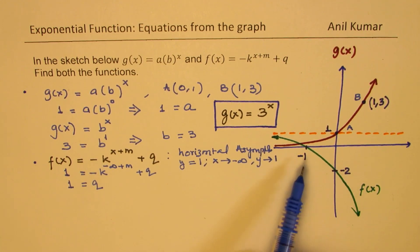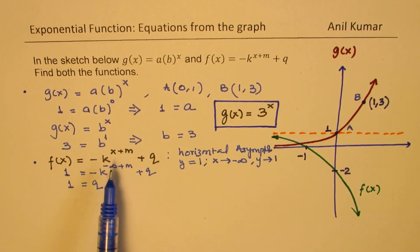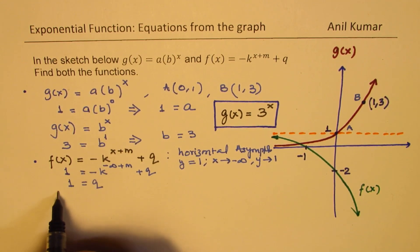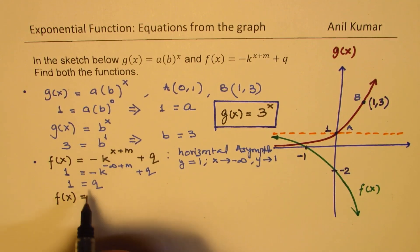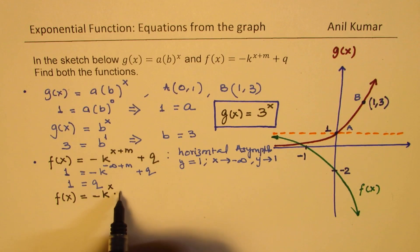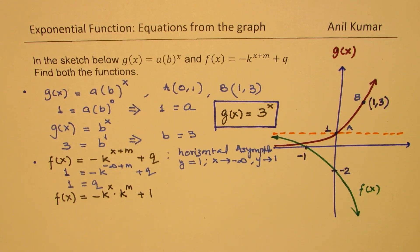Now let's use the other two points, -1 and -2, to find the value of m and k. So since we have very less space here, I will kind of divide this space and then work. So if I substitute -1 for x, in that case, let me now write this function f(x) = -k. Now when we have sum like this, I could actually write this as -k^x times k^m. And we have q as 1 as we just saw here.